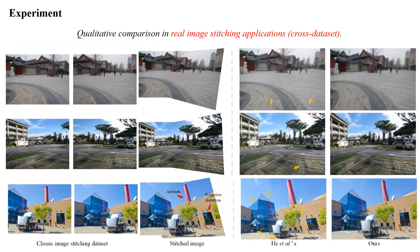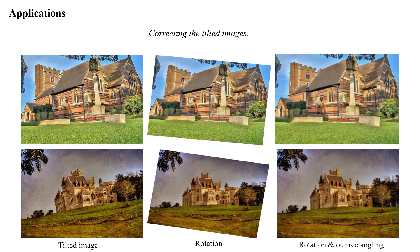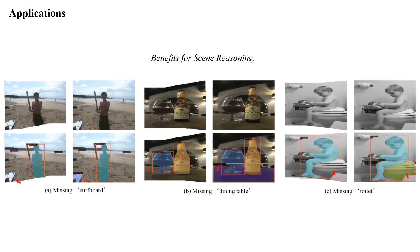Next, we evaluate our model in real image stitching applications. Our solution also produces more natural results even in these cross-dataset evaluations. Finally, we show some interesting applications of our rectangling. It can address the tilt problem together with rotation by warping the rotated image to a rectangle to correct the tilts. Also, it helps downstream tasks, as irregular boundaries may decrease the detection accuracy for objects near the boundaries, while rectangling helps to find the missing objects.